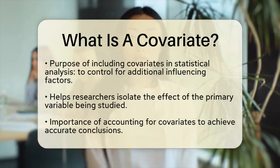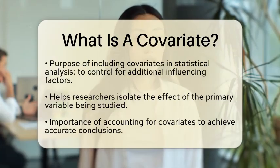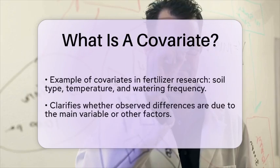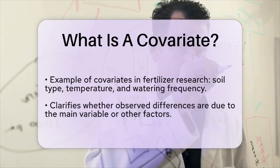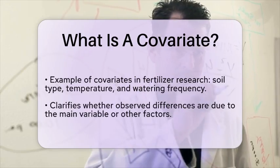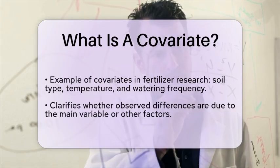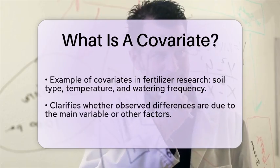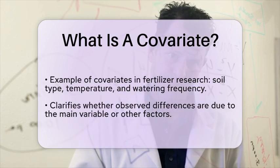By accounting for covariates, researchers can make more accurate conclusions about the relationship between the primary independent variable and the dependent variable. For example, if you were to analyze the impact of different fertilizers on plant height, you might include covariates such as soil type, temperature, and watering frequency.